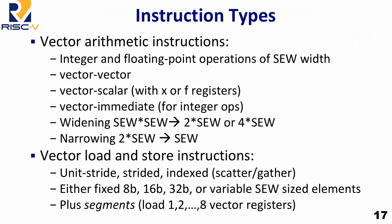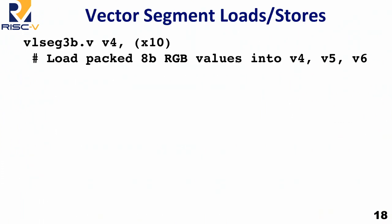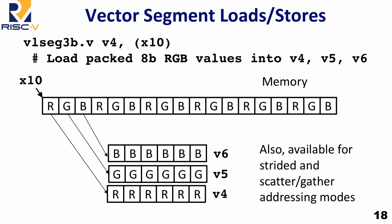We also support segments for loads and stores — loading structures into multiple vector registers. For example, in memory you have packed 8-bit RGB values; you can load those into three different vector registers, effectively doing a corner turn from an array of structures into separate vector registers. So a segment load of three into vector register 4 actually writes vector registers 4, 5, and 6 with those different values, making it easy to operate on those structs using regular vector instructions.